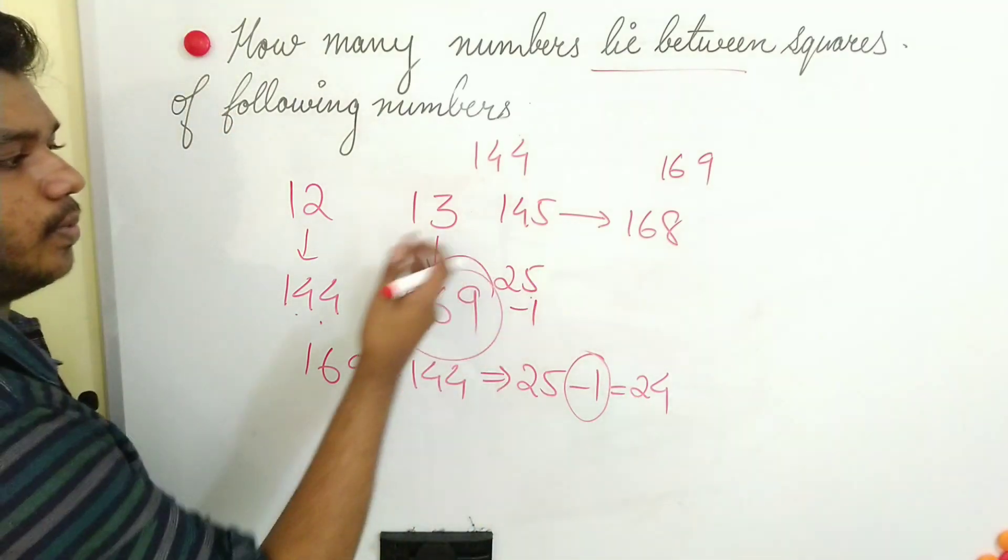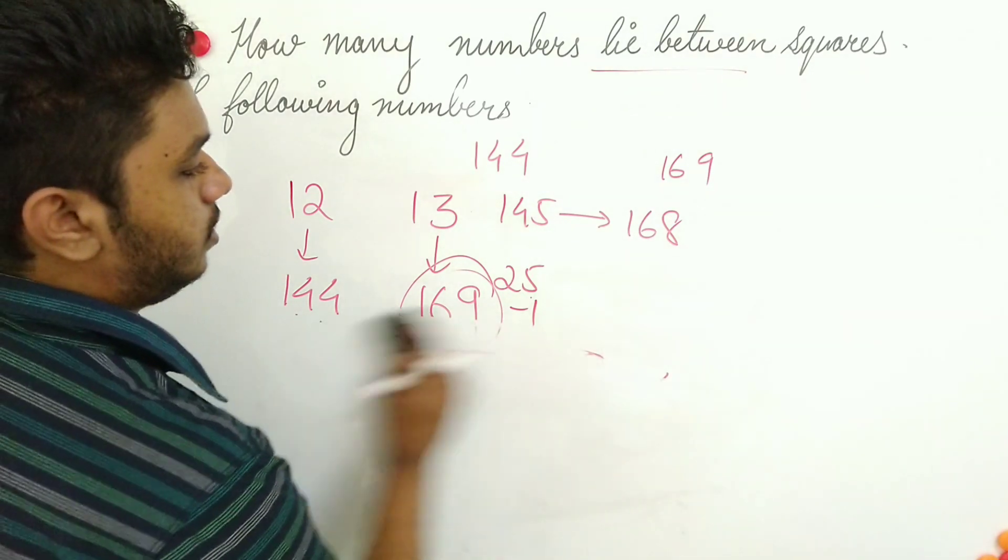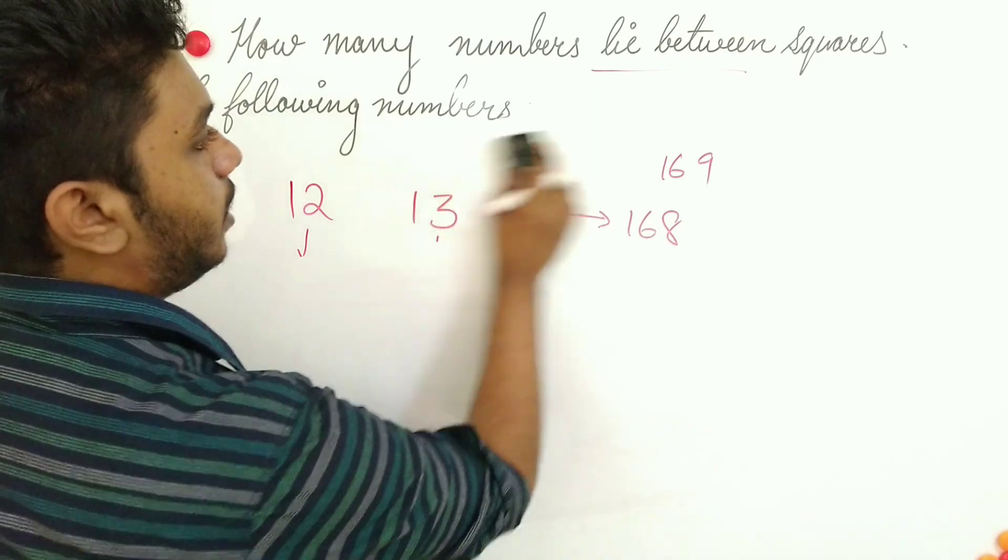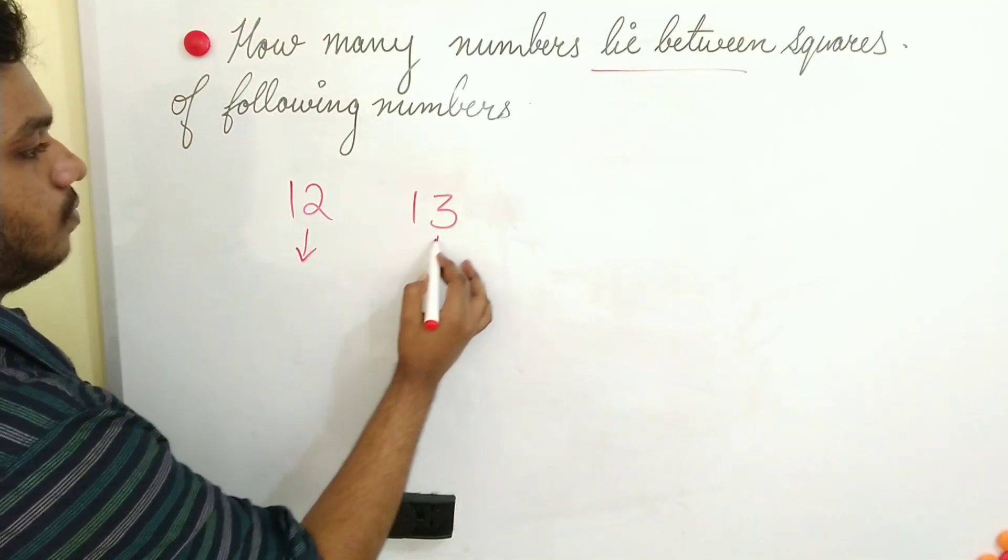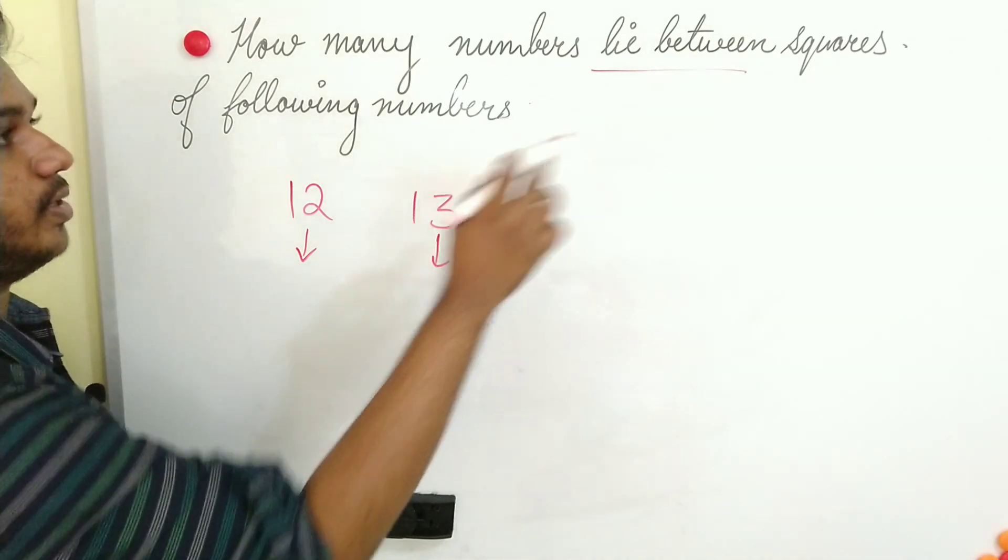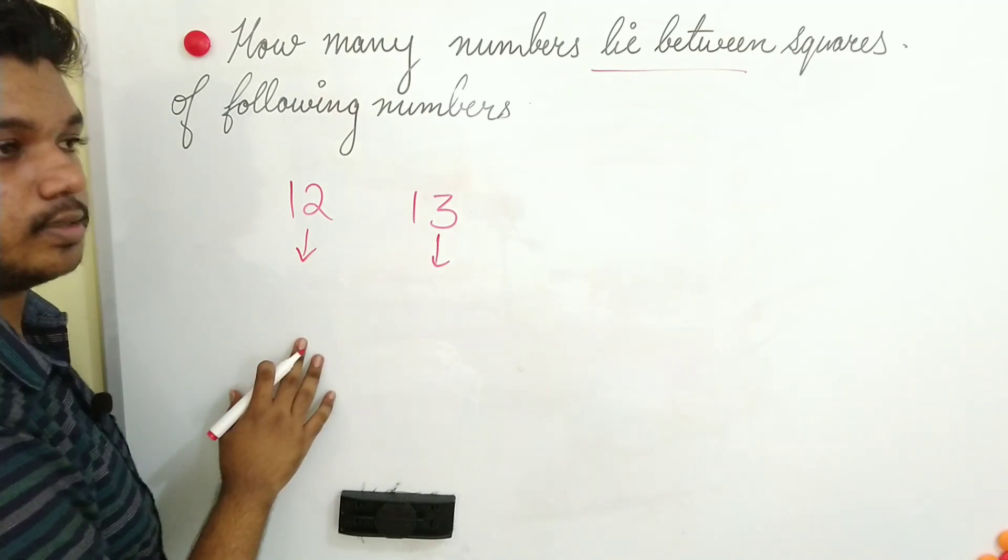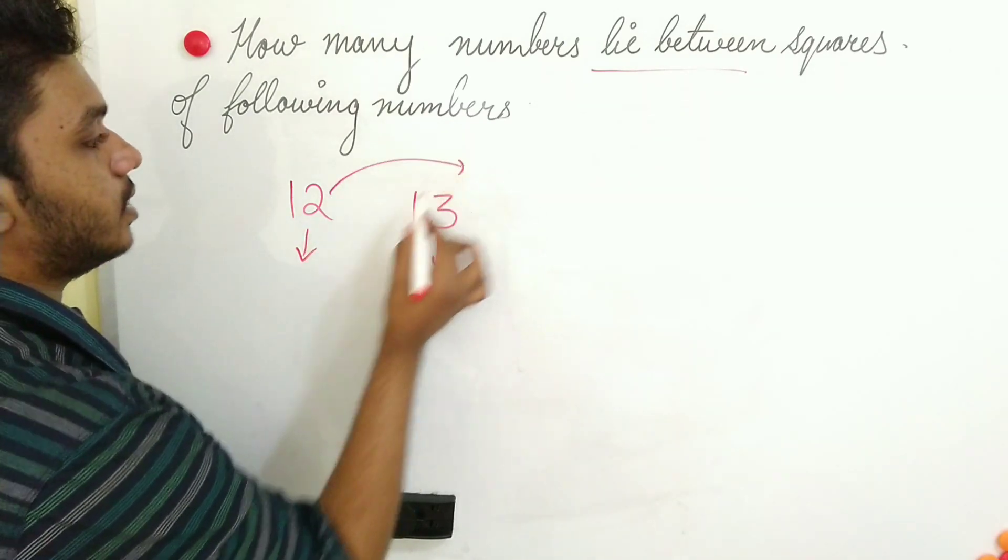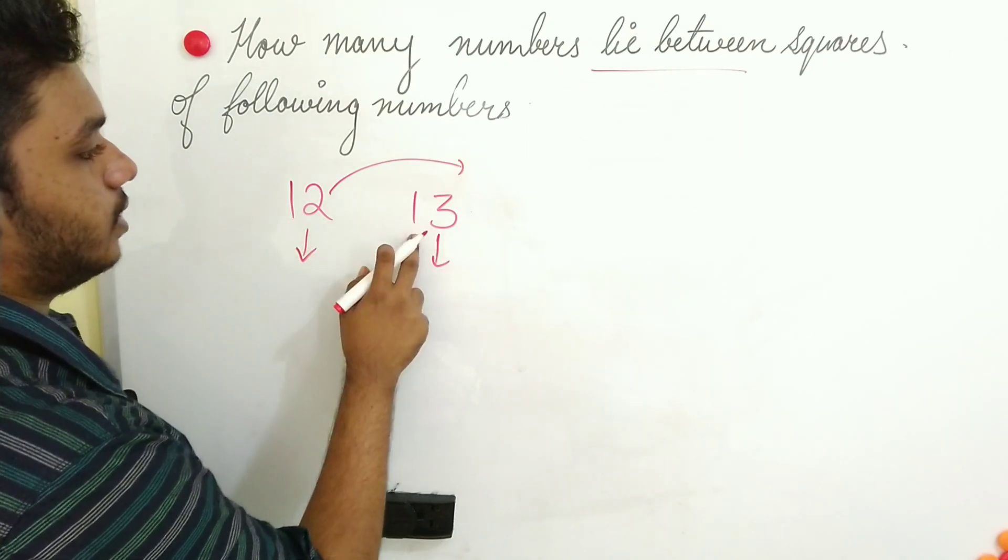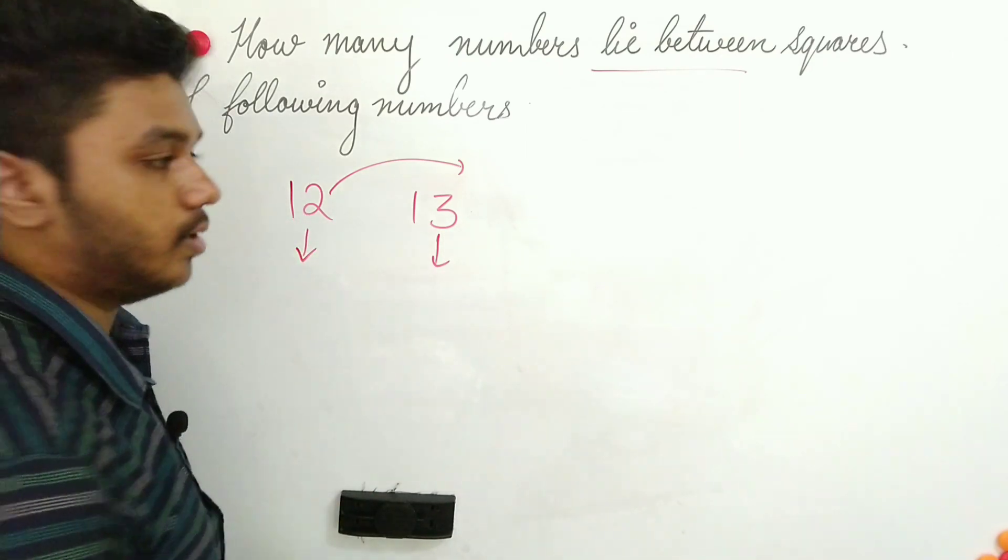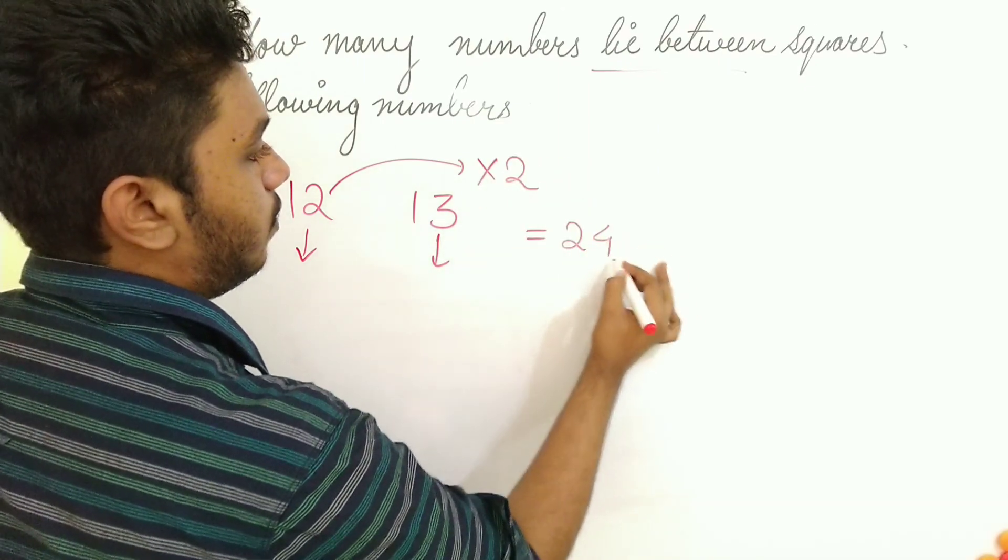Okay, this is a normal method, the general method you can go for. So I will show you one more method so you can directly find out the answer for this. If they ask you to find the numbers lying between squares of these following numbers, no need to find the squares. I can just take the smallest number among these. Among these two numbers you can see 12 and 13. 12 is the smallest number. I have to just multiply with 2, which is equal to 24 numbers.